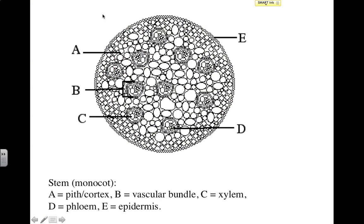Once again, this is the monocot stem diagram you're responsible for. You can see A is the pith or cortex — it kind of fills the space and adds structure to the stem. B is going to be the vascular bundles that are going to have the xylem and phloem. More specifically, C on here — the larger tubes are going to be xylem, and then the smaller tubes within the vascular bundle are going to be phloem. E on here, epidermis, is just that outer covering around the stem.